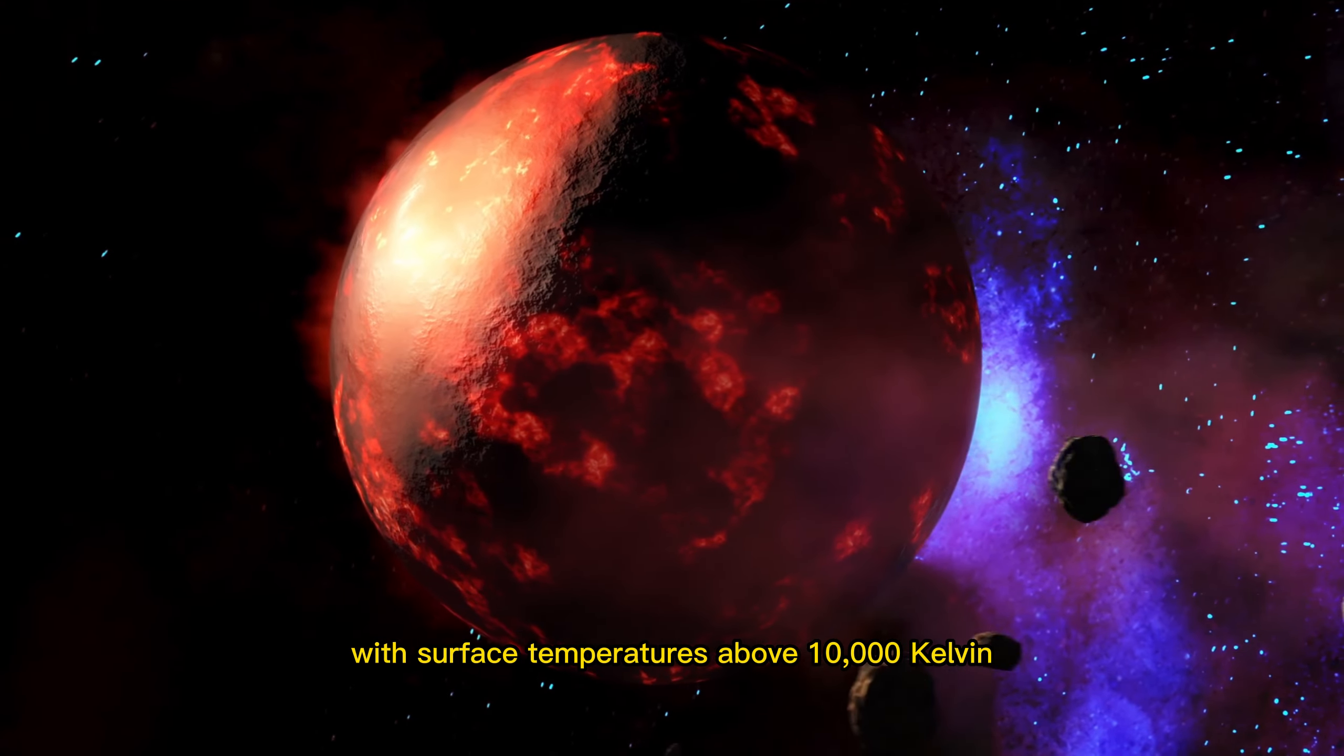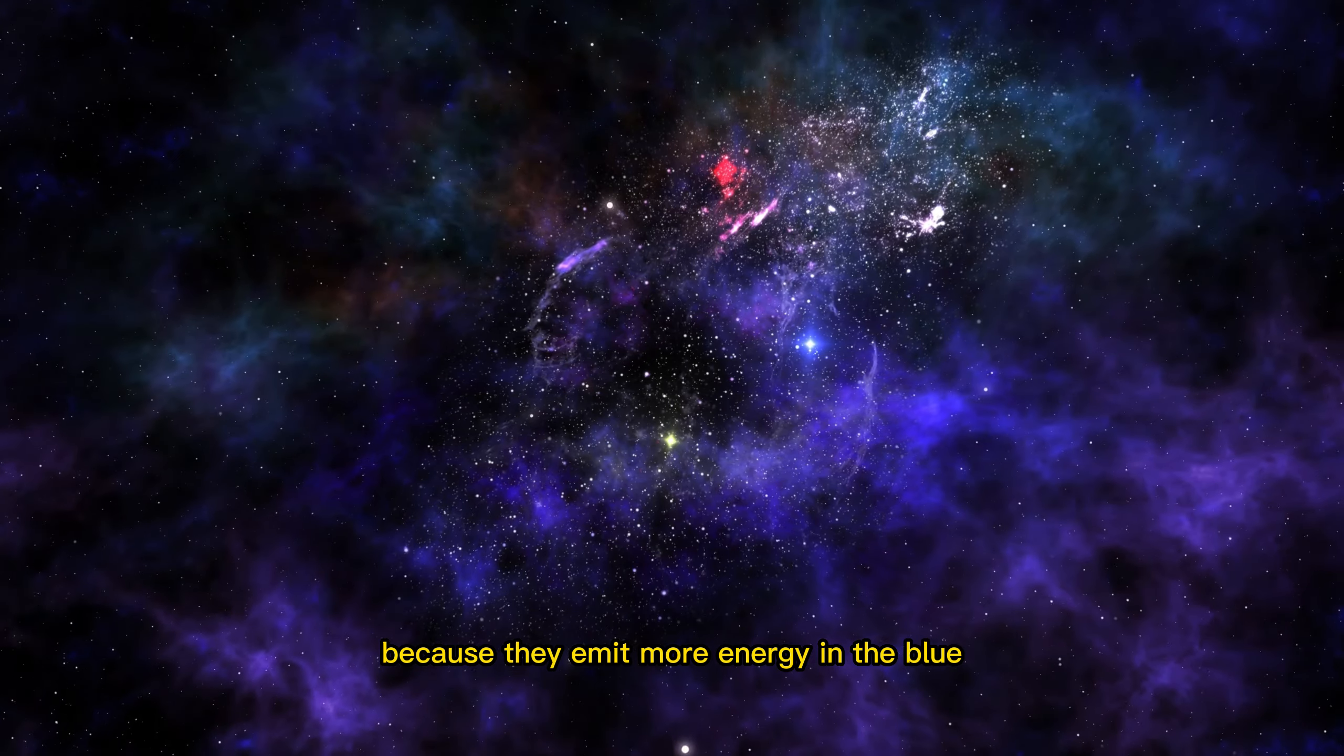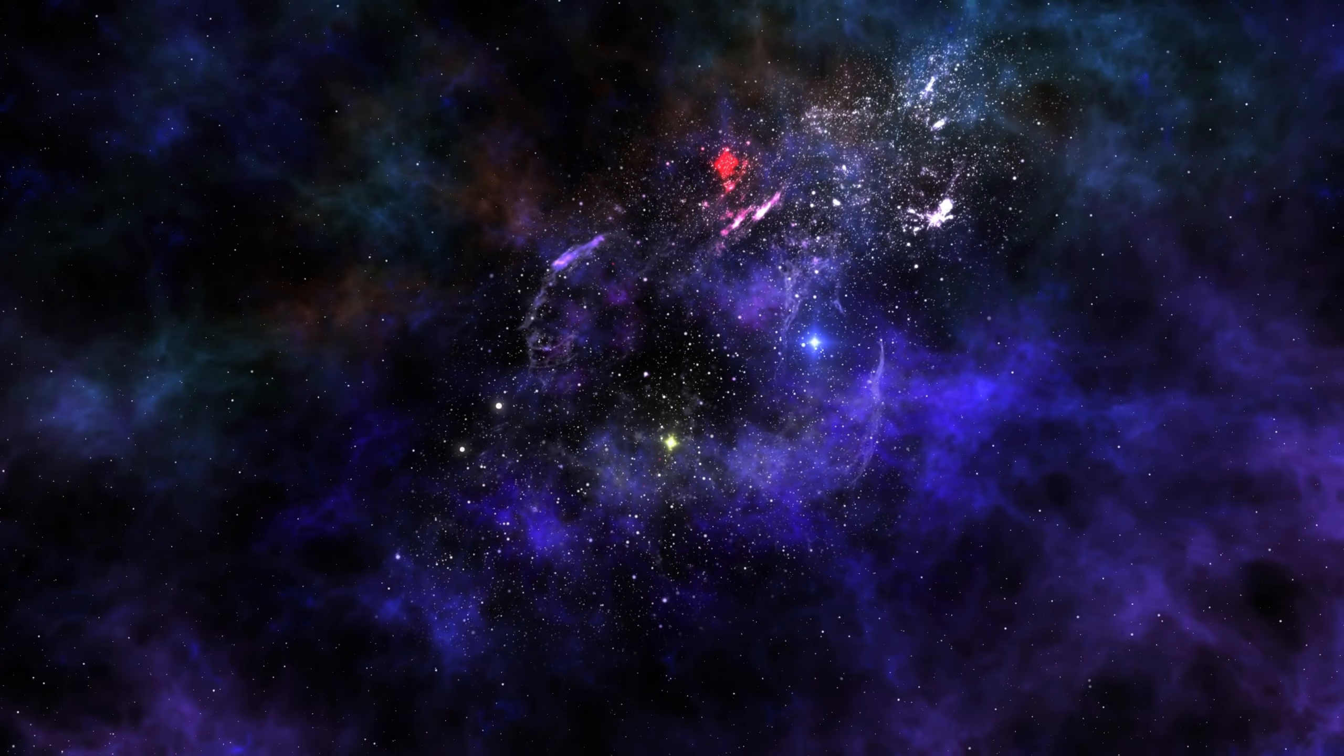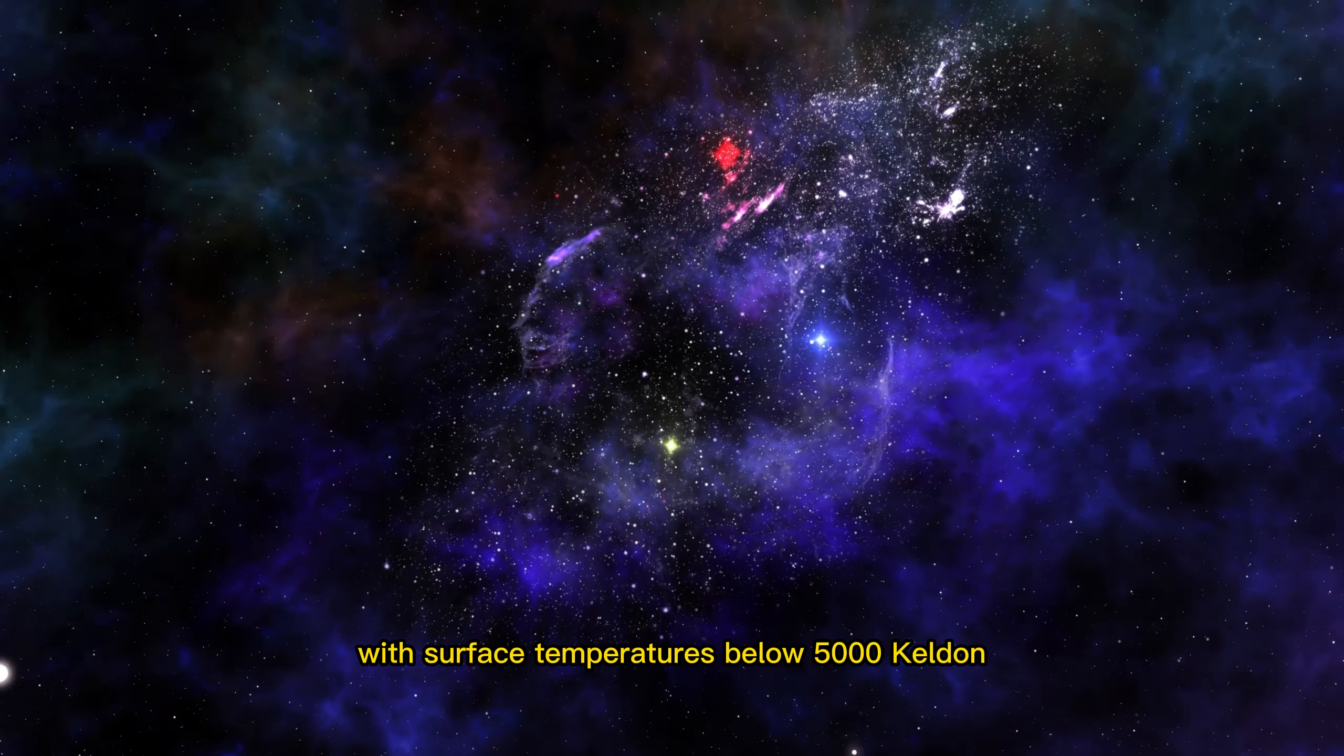surface temperatures above 10,000 kelvin appear blue or white because they emit more energy in the blue and ultraviolet part of the spectrum. Cooler stars with surface temperatures below 5,000 kelvin appear red because they emit more energy